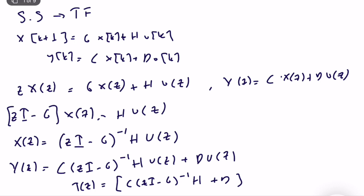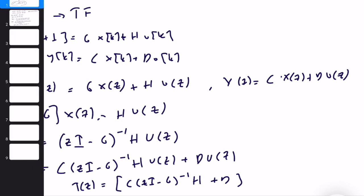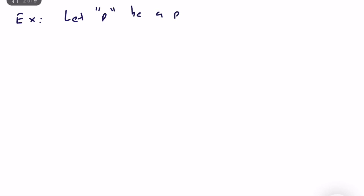Now let's show some illustrations to figure out what we can infer about different kinds of systems with the same transfer functions. Let p be a pole of T(z), given a state-space representation. The question is: is p related to G, the state evolution matrix?